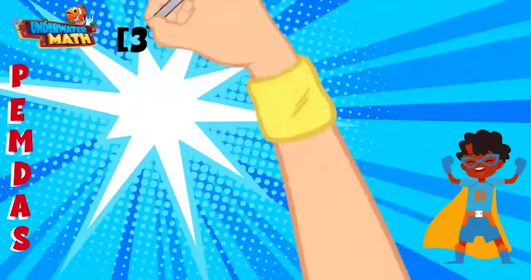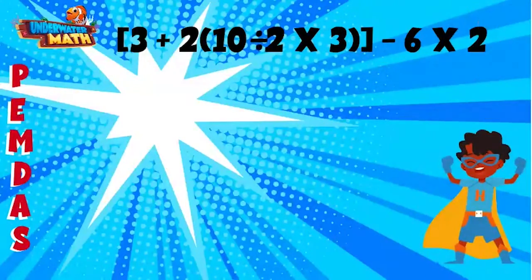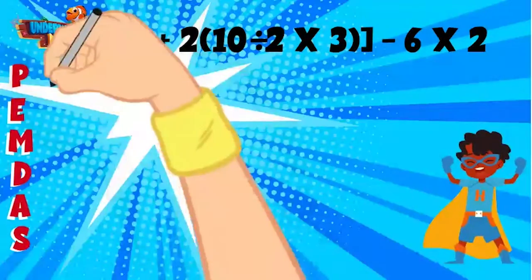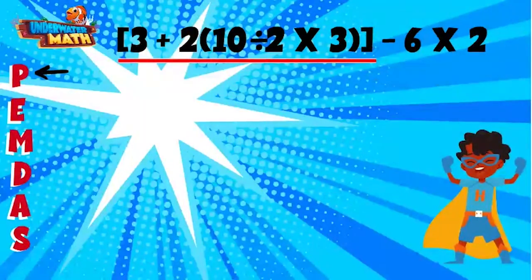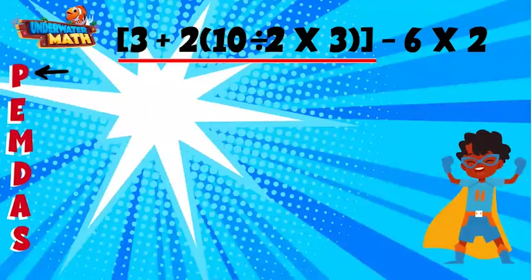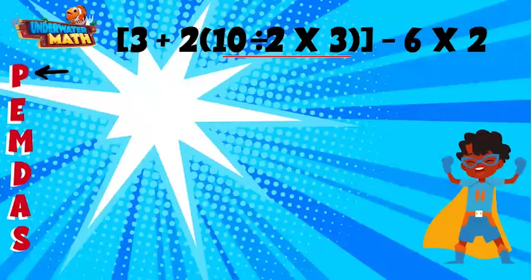This is my friend Henry and he is going to help you with the next example using PEMDAS. We always start with parentheses. This problem has brackets and parentheses, and we follow the order of operations again. Within the set of brackets we have parentheses, so we start there and follow our order of operations.